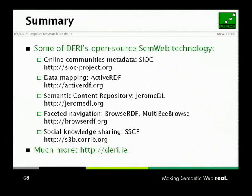In terms of available technologies: you can look at the SIOC project — Semantic Interlink of Online Communities — at siocproject.org. The data mapping and Ruby on Rails library is available under activerdf.org. There's a digital library at jeromydl.org. The faceted navigation interface you saw is available at browsrdf.org. Social knowledge sharing is available at s3b.deri.org. Much more information about the institute is at deri.ie. We're working together with Cisco, Nortel, and Ericsson on some of the technologies. Thanks again for your attention — we're happy to take questions.